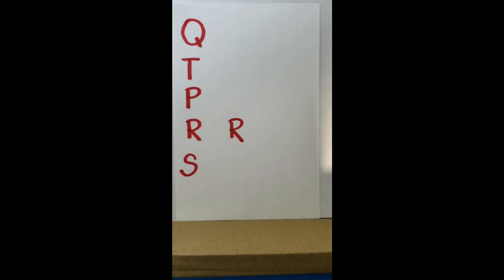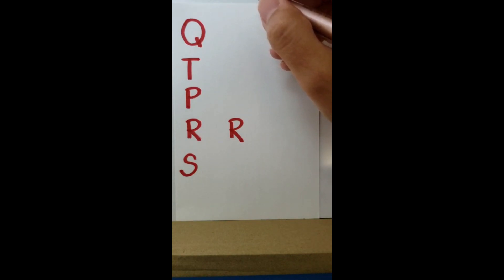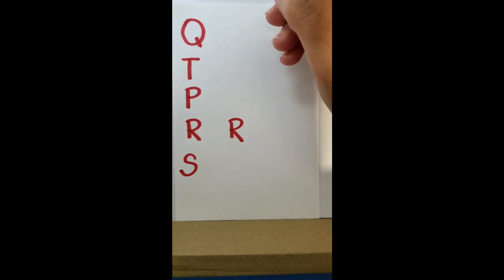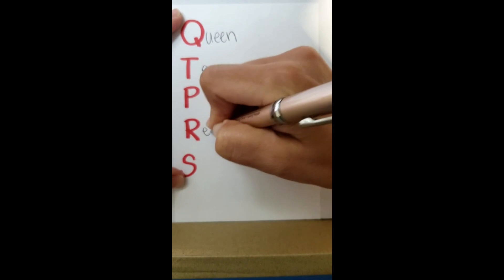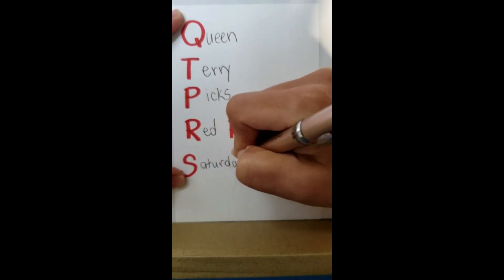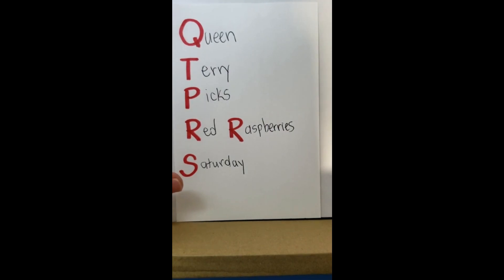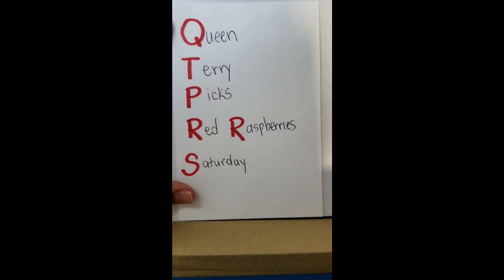Classifying quadrilaterals can get a little confusing, so here's a mnemonic device to help: Queen Terry Picks Red Raspberries Saturday. Each red letter stands for a different quadrilateral — Quadrilateral, Trapezoid, Parallelogram, Rhombus, Rectangle, and Square. I'll show you next how to use this to simplify classifying quadrilaterals.